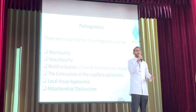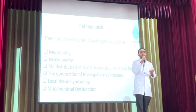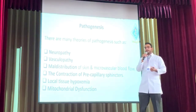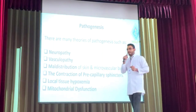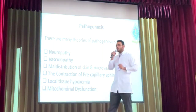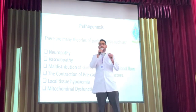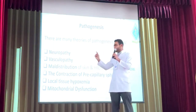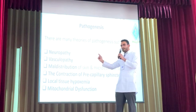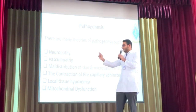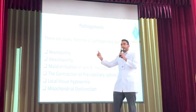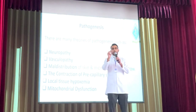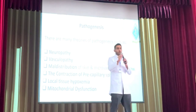Regarding pathogenesis, there are different theories on the pathogenesis of erythromelalgia: neuropathy and vasculopathy. In vasculopathy, narrowing of the blood vessels occurs. This shows the normal lumen of the blood vessels, and this is the narrowing. When there is narrowing of the blood vessels, the volume of blood will be low.